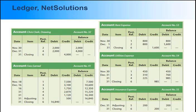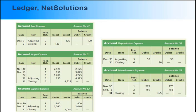Net Solutions ledger activity continues with entries posted to Chris Clark drawing, fees earned, rent expense, utilities expense, and insurance expense. The remaining ledger activity includes rent revenue, wages expense, supplies expense, depreciation expense, and miscellaneous expense.